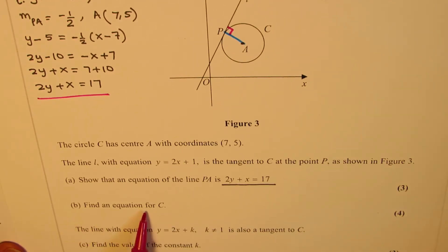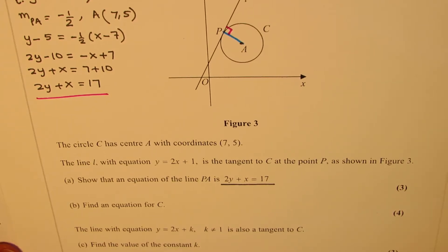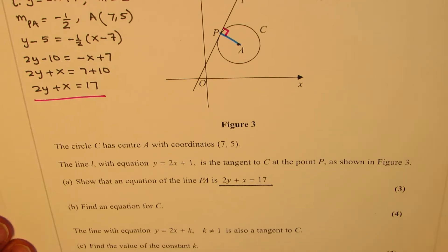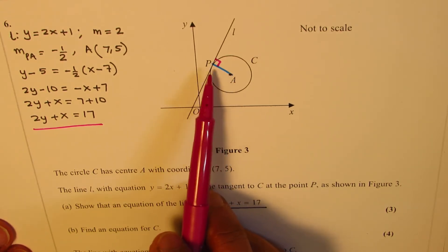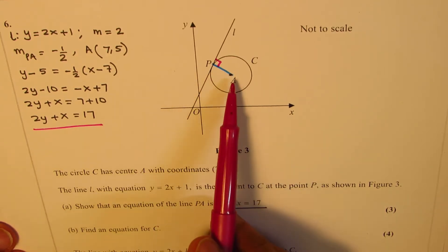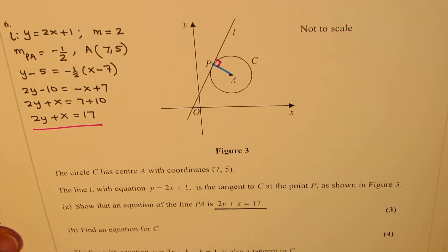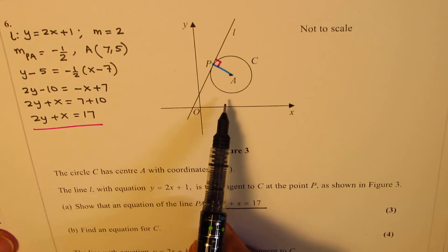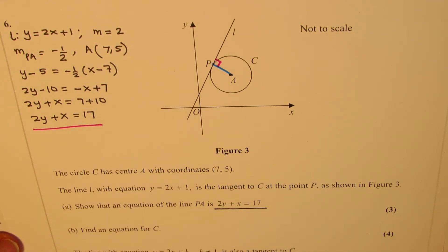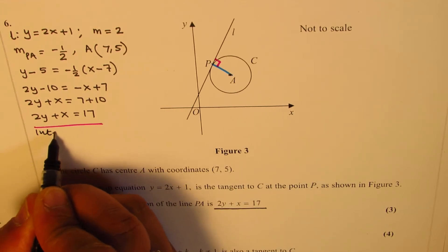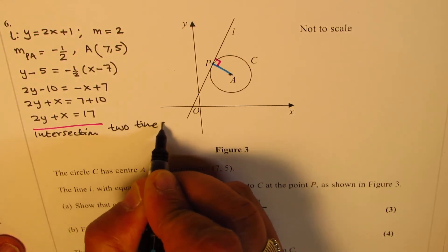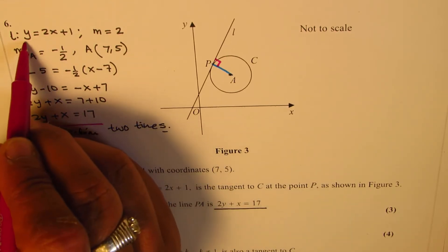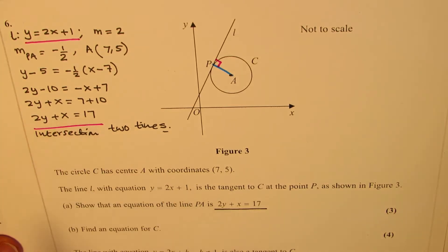Now we need to find the equation of circle C. One way is to find the radius, which is necessary. Once we find the radius, we can write the equation since we know the center A. The radius is the distance to point P, which is the point of intersection between these two lines. So we'll find point P, the intersection of the two lines: y = 2x + 1 and 2y + x = 17.